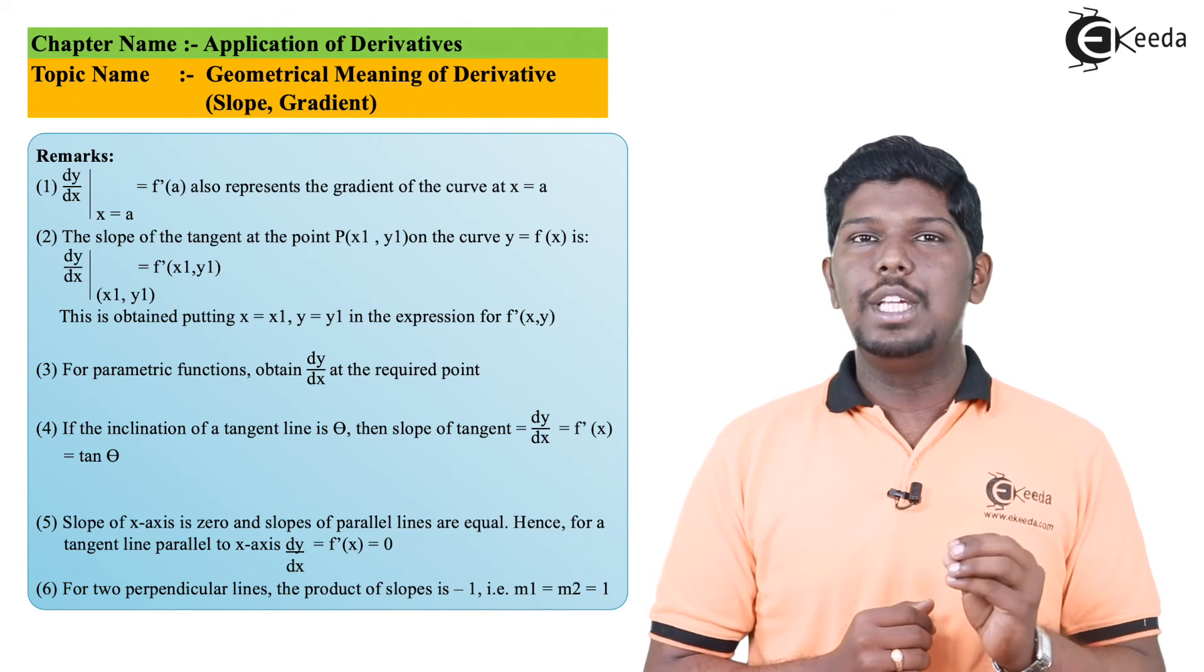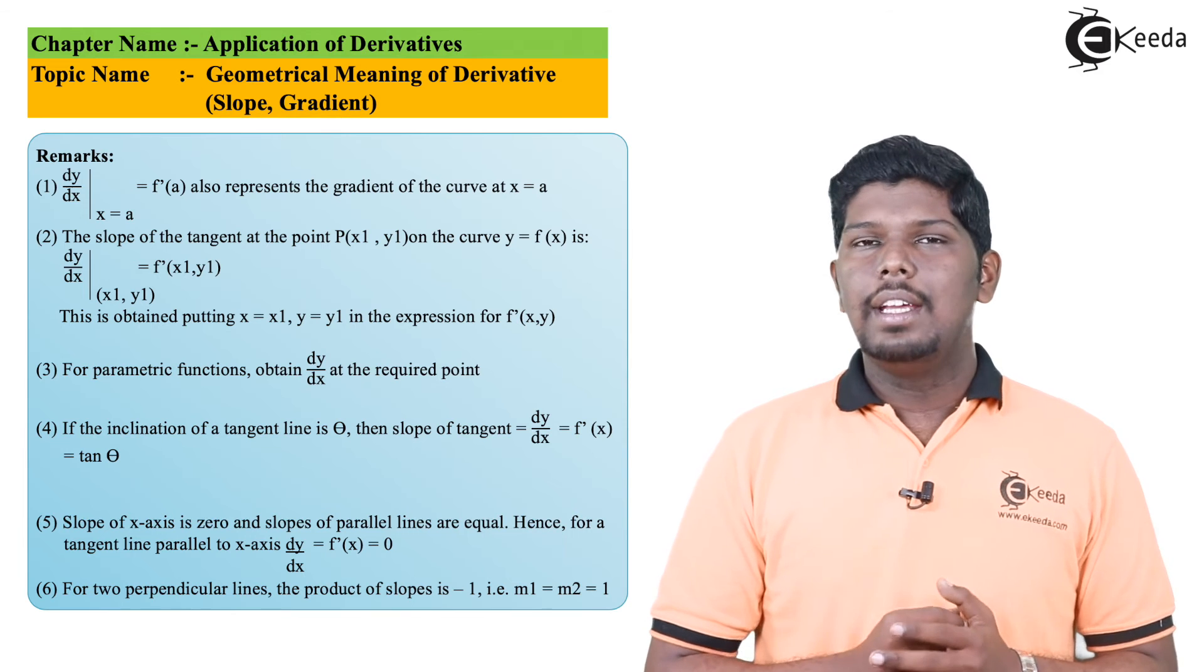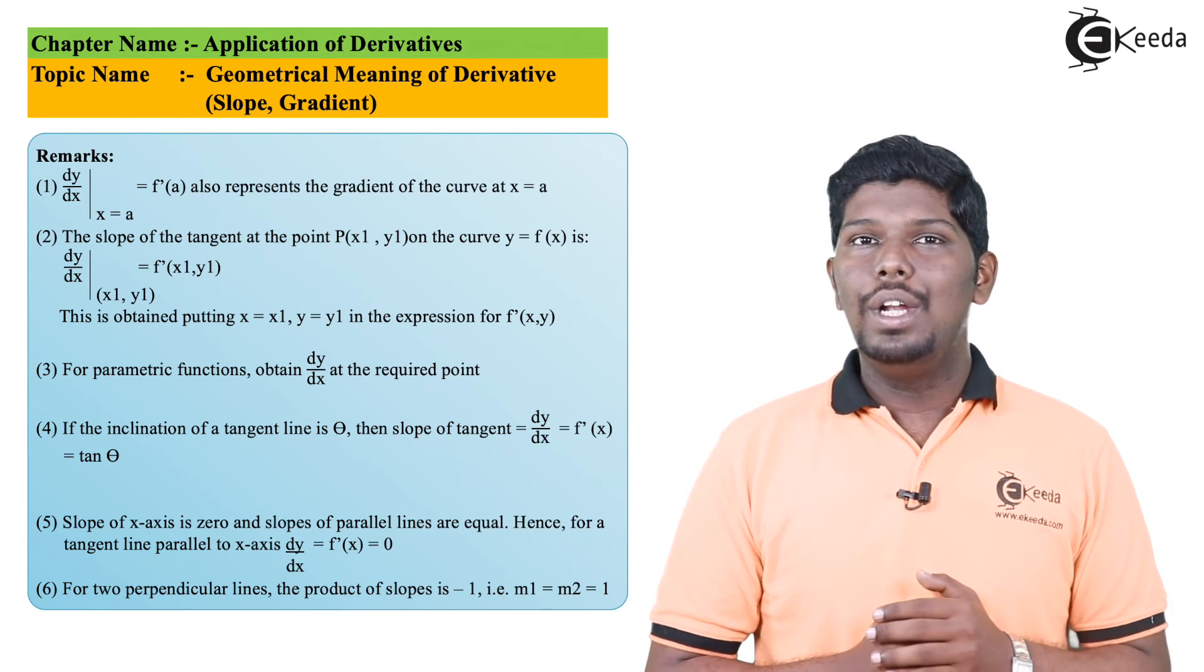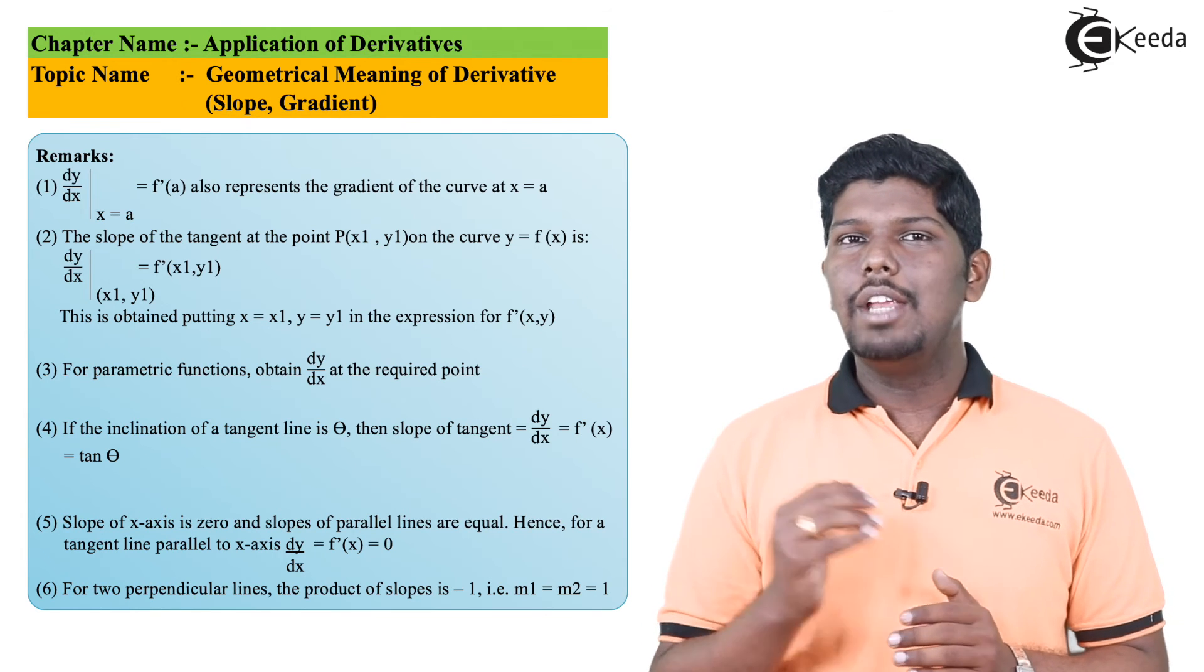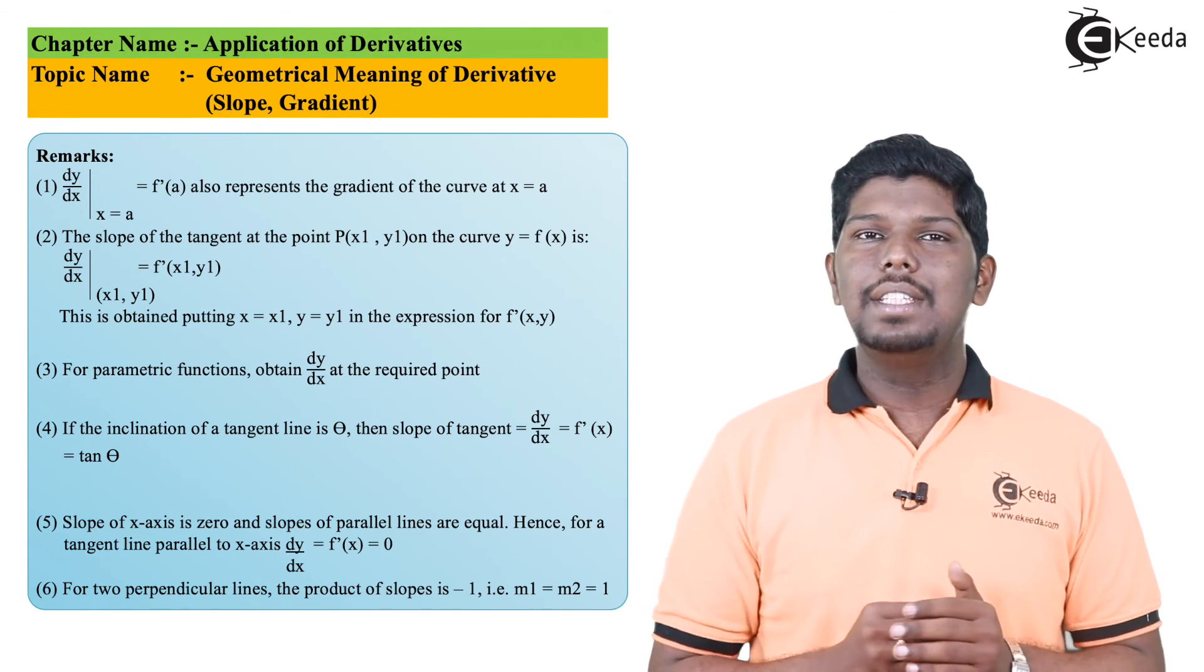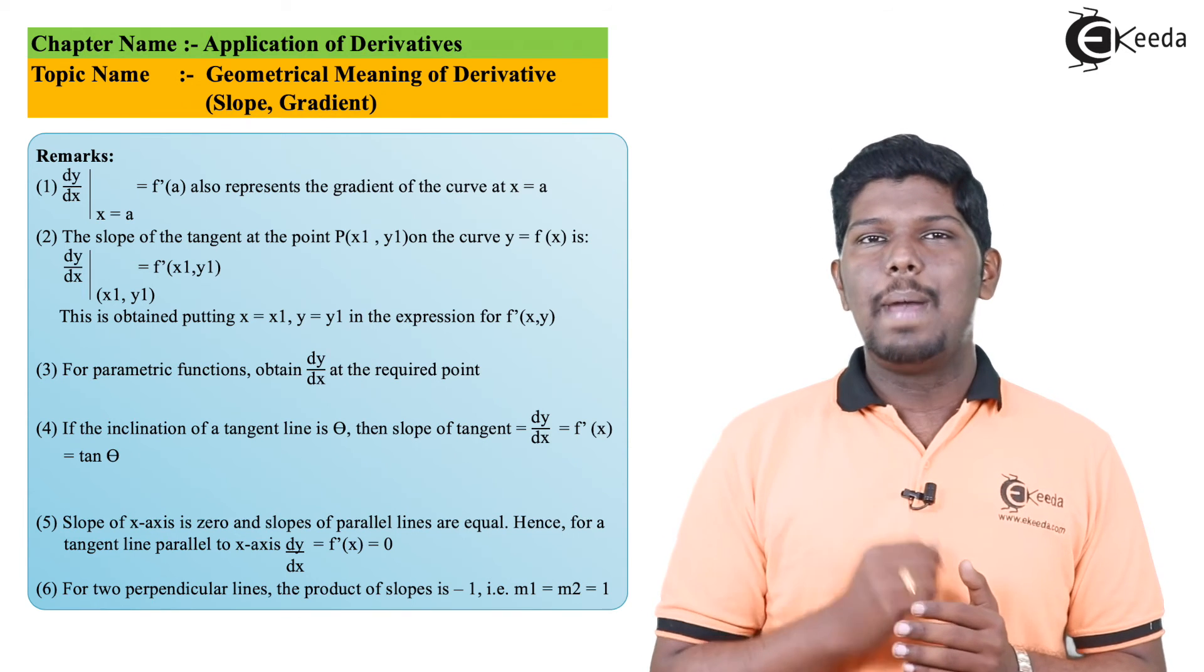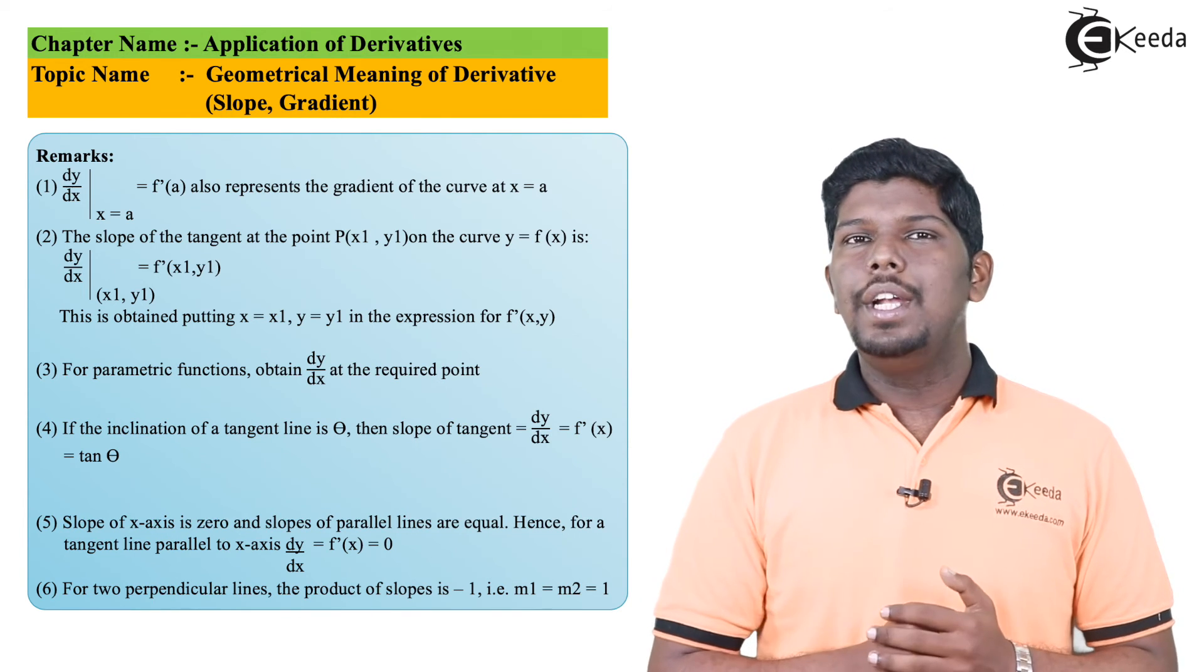Now the fifth point that we are going to see is that in certain cases you might find that the first derivative, that is dy/dx, its value is equal to 0. We know that slope is equal to 0 only when the line is x-axis or it is parallel to x-axis. So if we have first derivative as 0, it means that tangent will be either x-axis or parallel to x-axis.